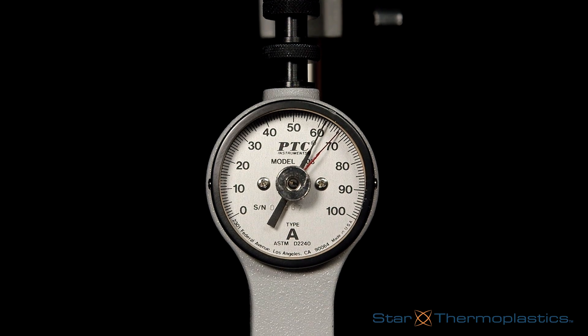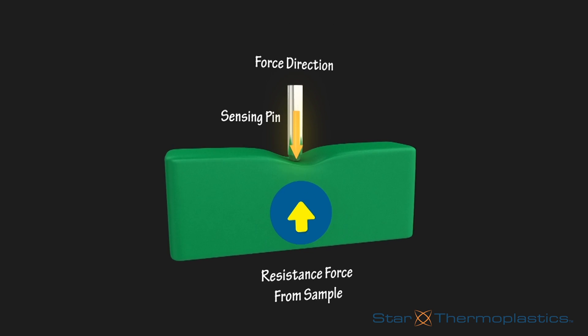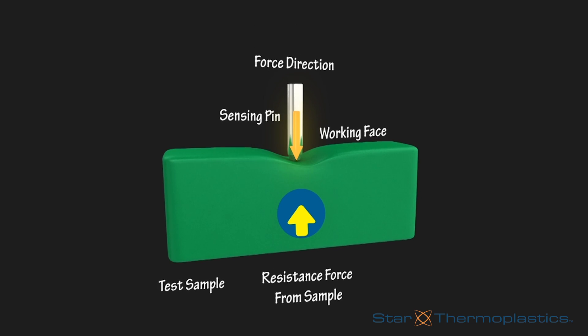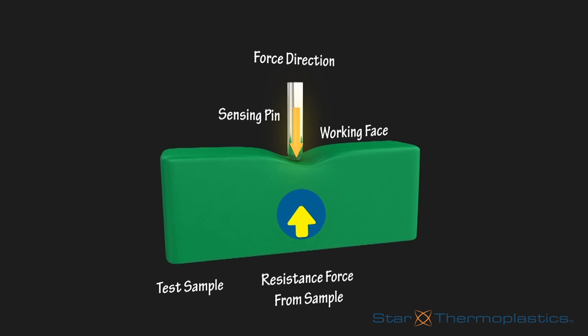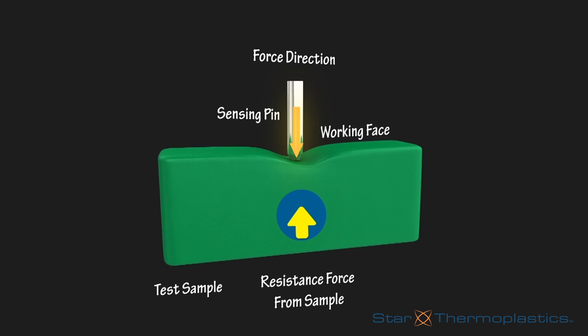Inside the durometer is where the magic happens. A small spring is used to push a little metal indenter into the surface of the material sample, and it measures how far the indenter penetrates the material.